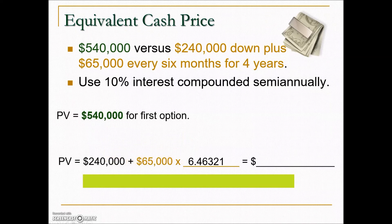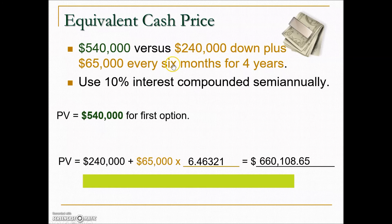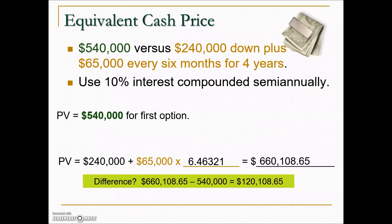Looking on our present value table we get a multiplier, which we multiply by the regular payment of $65,000 and add to the down payment of $240,000. In terms of a lump sum, this second option has a today cash value of over $660,000. So which is the better deal? The second one is the better deal. Subtracting the $540,000 cash offer from the present value of the second option, we find a difference of over $120,000 between the two offers.